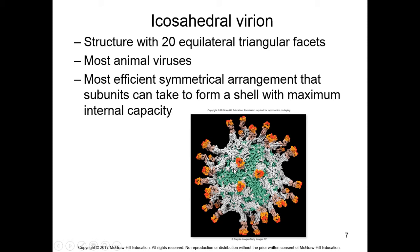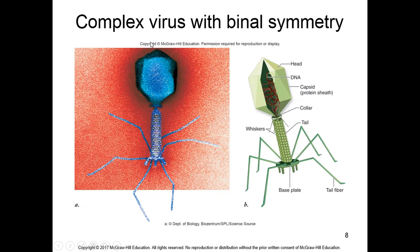Icosahedral virions are structures with 20 equilateral triangular facets. Most animal viruses are icosahedral — they are the most efficient symmetrical elements, allowing maximum internal capacity and accommodating the largest nucleic acid. For bacteriophages with binary symmetry, there is a head with an icosahedral or helical capsid joined to a helical tail via collar proteins, plus a base plate with tail fibers that assist attachment to different surfaces.